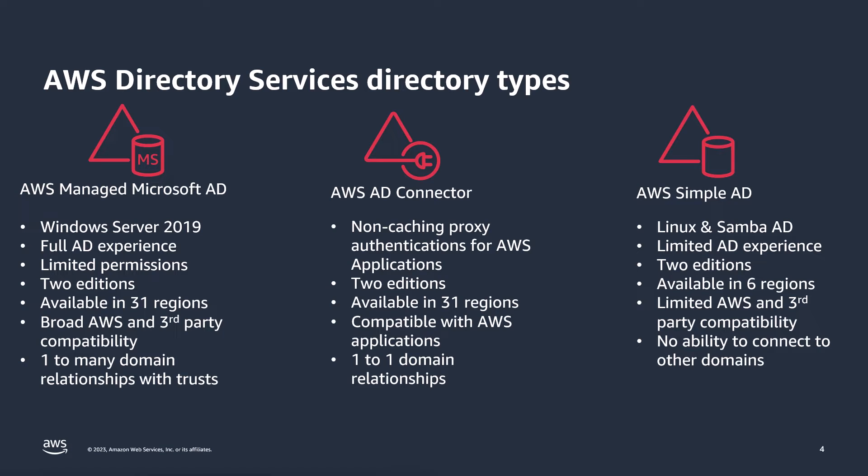Standard edition supports up to 30,000 objects but does not offer the ability to extend into multiple regions. The service is available in 31 regions today, including the two GovCloud regions. It offers broad AWS and third-party compatibility — most third-party applications will work with the service as long as they don't require domain admin or enterprise admin. It also offers one-to-many domain relationships via trust.